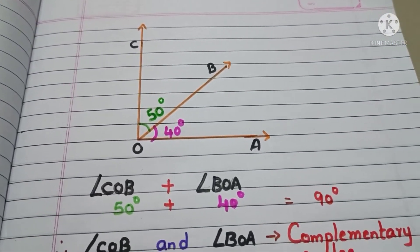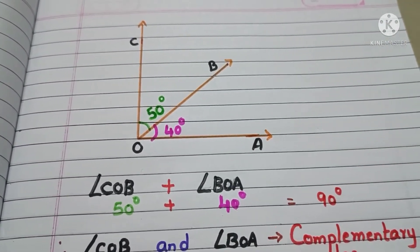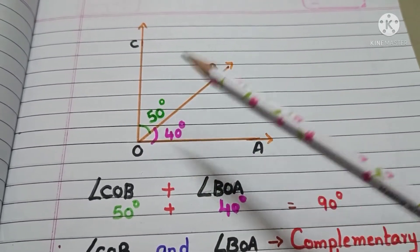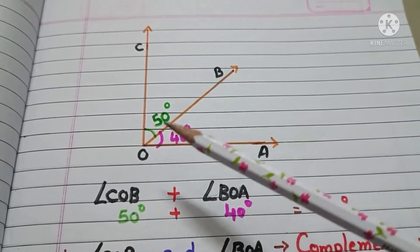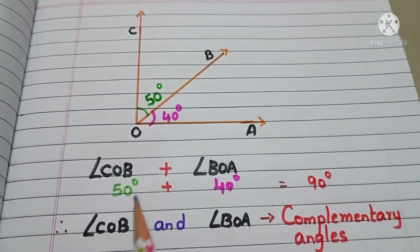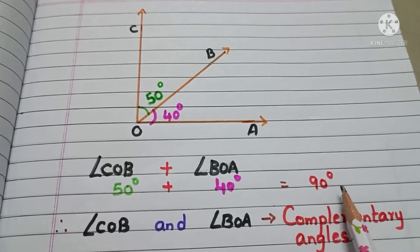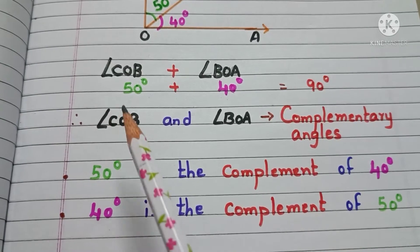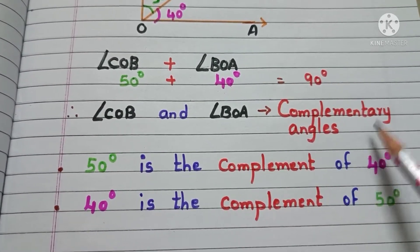Now, let us see another example. Observe this figure. In this figure, the angle COB measures 50 degrees and the angle BOA measures 40 degrees. Now, take the sum of two angles. 50 degrees plus 40 degrees, that is equals to 90 degrees. Therefore, we can say that angles COB and BOA are complementary angles.